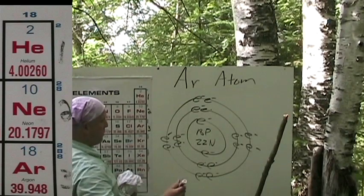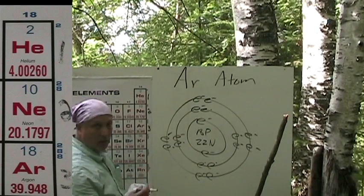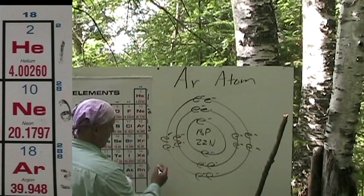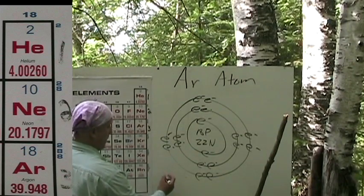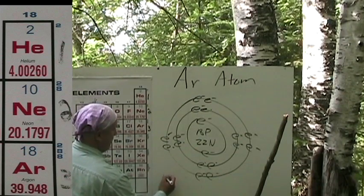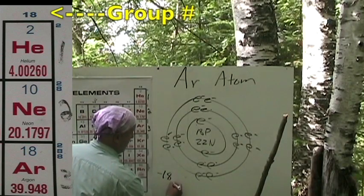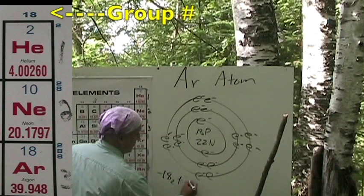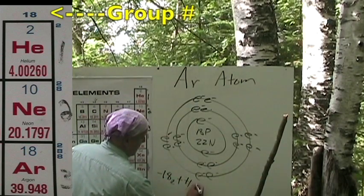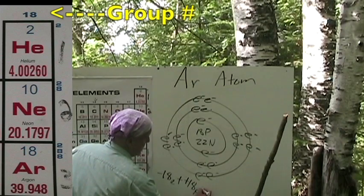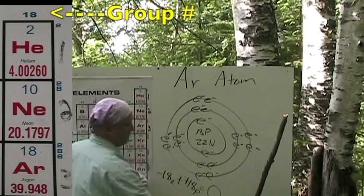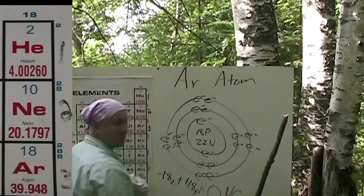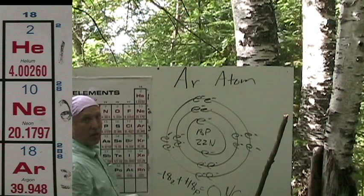Let's do our formula. Our formula is: negative 18 electrons plus positive 18 protons equals zero net charge. And we can just abbreviate that as NC for net charge.